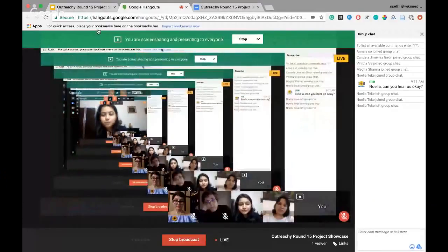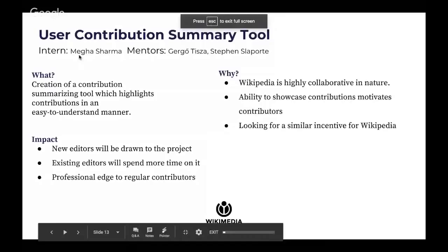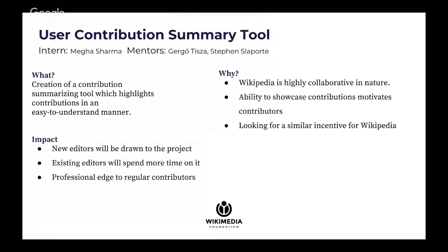Hello everybody, I am Mega, a final year undergrad student based out of Chandigarh, India. For the past three months I have been developing a tool for Wikipedia, which is a user contribution summary tool. In this five-minute window I'll be explaining the what, why, and how of this tool. This was an experimental tool with no existing code base or requirements — it was a completely new idea that came out of an outreach program.